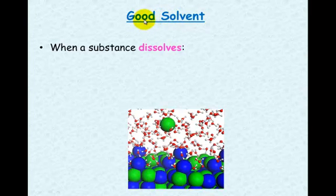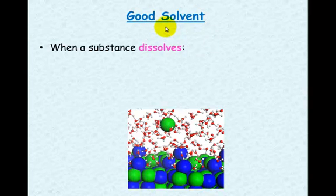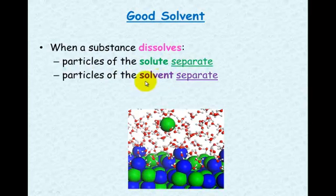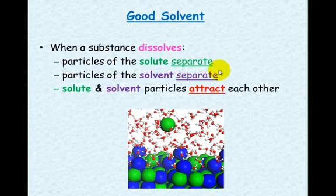Last but not least, we need to talk about the fact that water is a good solvent. This is so important in our lives because all of our cells function on the fact that water is a good solvent, as do plants and animals. When a substance dissolves, the particles of the solute separate from one another, and the particles of the solvent need to separate from one another. Then the solute and solvent particles need to be attracted to one another.